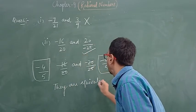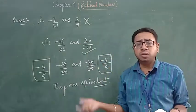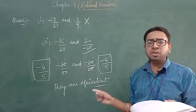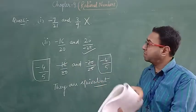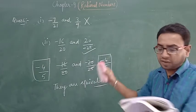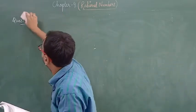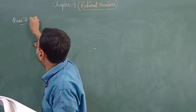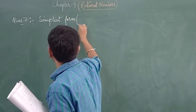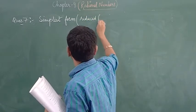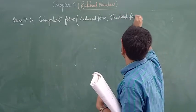You have to use this method. Another method is cross multiplication, which can also be used to solve. This is the conventional method — follow this. Question number 7: rewrite the following rational numbers in the simplest form. Remember, simplest form means reduced form or standard form — these are all the same thing.